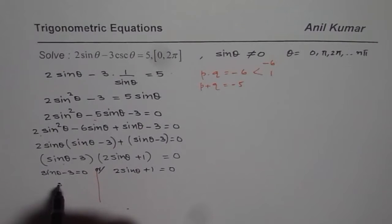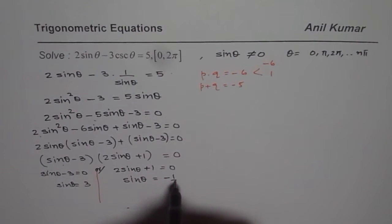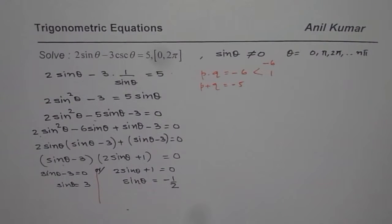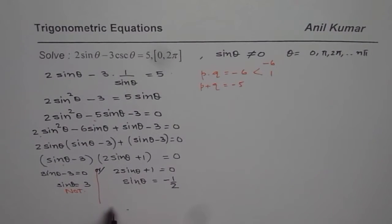Now this gives us sin theta equals to 3 and here we get sin theta equals to minus half. Now sin theta equals to 3 that is not possible. So that is not a solution. But here we do have solutions.